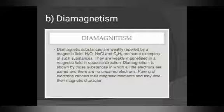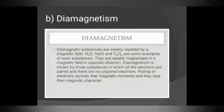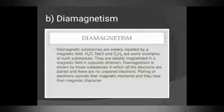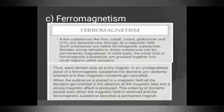Second is diamagnetism — opposite to paramagnetism. Diamagnetic substances are weakly repelled by a magnetic field. Examples include H₂O, NaCl, C₆H₆. They are weakly magnetized in the opposite direction. Diamagnetism is shown by substances in which all electrons are paired and there are no unpaired electrons. Pairing of electrons cancels their magnetic moments.